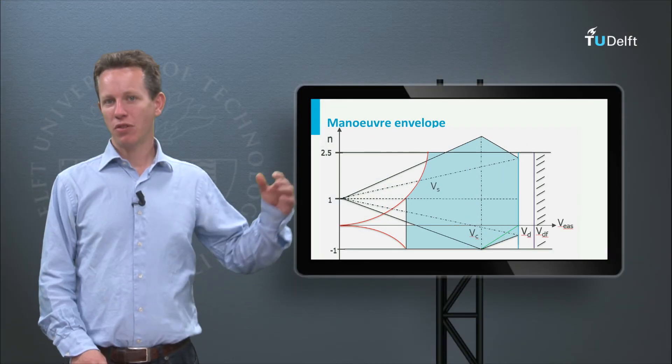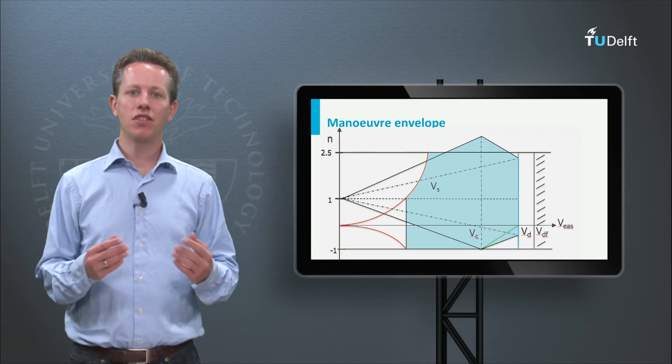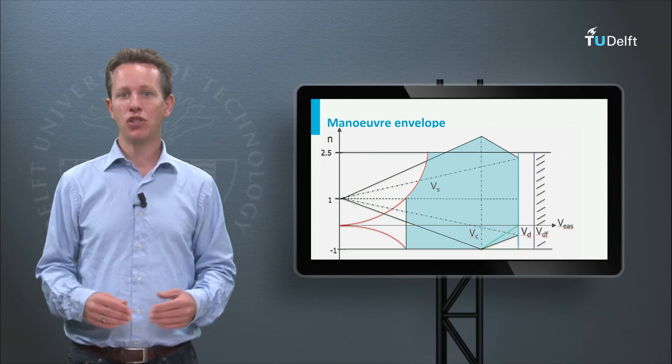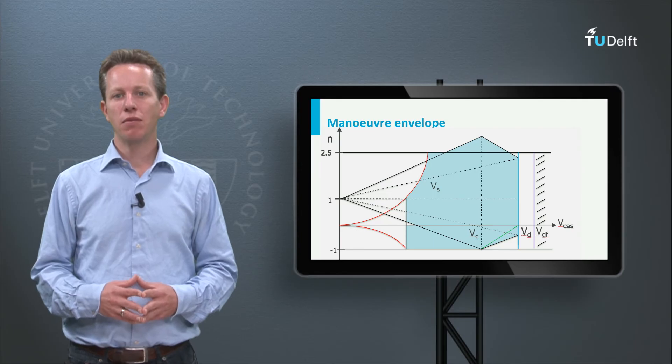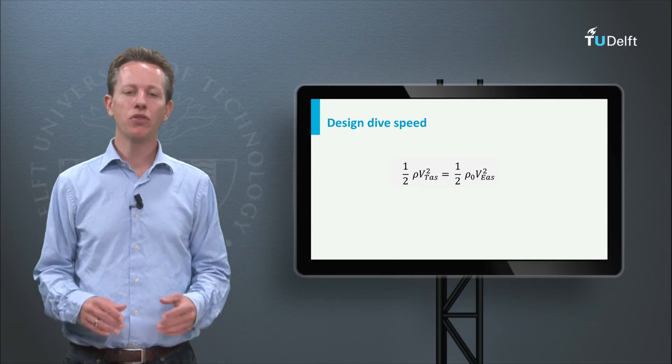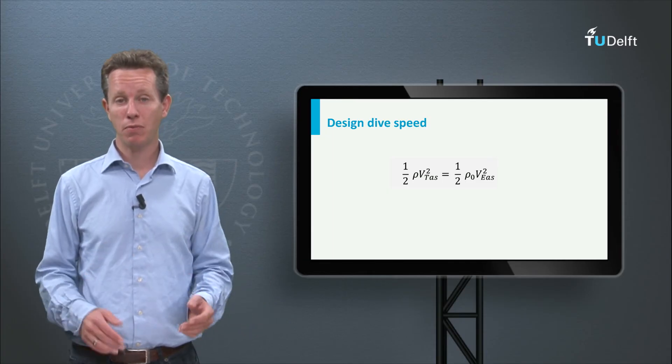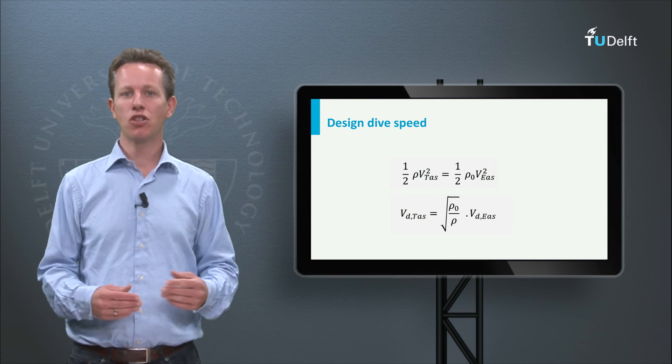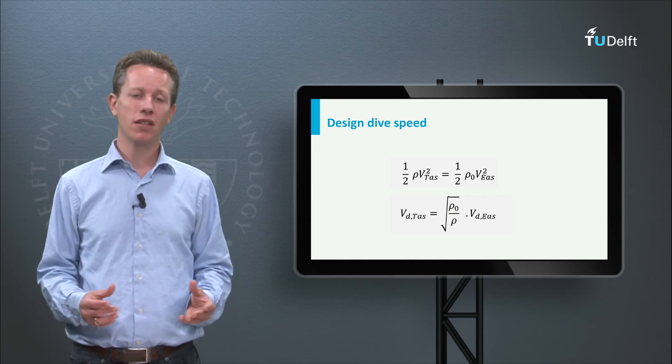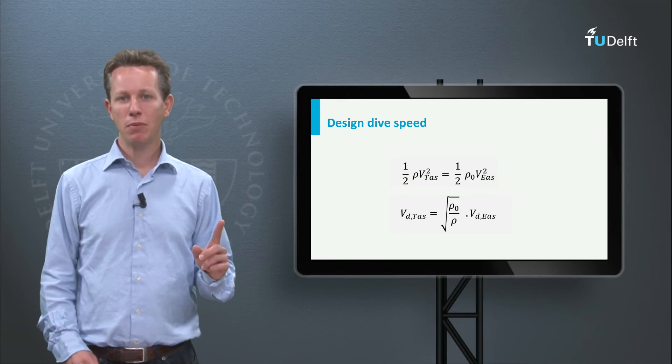Concluding, the airframe is designed to withstand the load factor airspeed combinations indicated in the maneuver and gust load envelopes. The maximum airspeed in these diagrams is the design dive speed. It is a constant equivalent airspeed. However, expressed as a true airspeed, it is in fact changing with altitude. The equivalent airspeed is defined by making use of the air density at sea level, thus half rho v true airspeed squared equals a half rho v equivalent airspeed squared. Consequently, the design dive speed expressed as a true airspeed becomes vd. As a true airspeed is the square root of rho at sea level divided by the actual rho multiplied with the design dive speed as an equivalent airspeed. So based on this equation it increases with increasing altitude. This speed limit should never be exceeded.